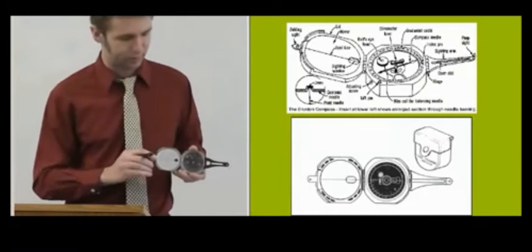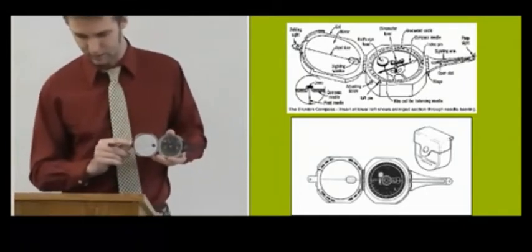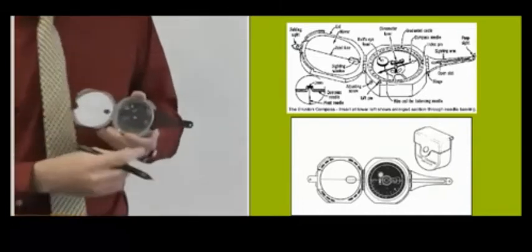Then there's these things protruding from the side of the compass. There's the folding sight right here, which is a small one, and then there's the sighting arm.